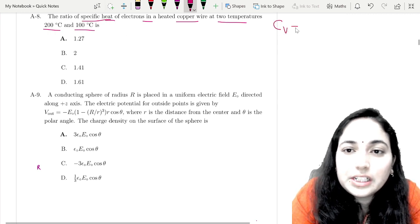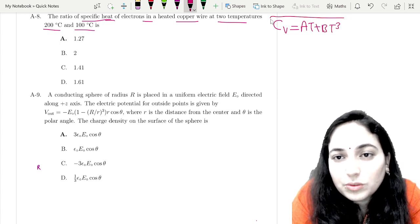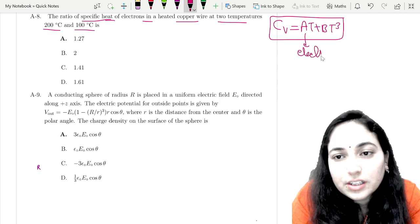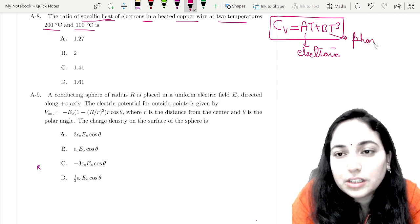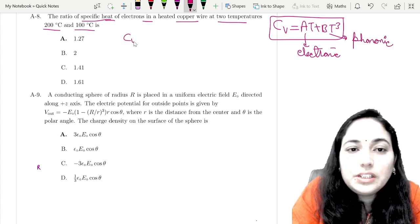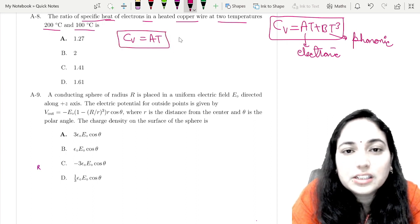When we talk about lattice specific heat, we get AT plus BT³ because we consider electronic specific heat and lattice vibrations due to phononic specific heat. For electronic specific heat, cv only takes AT because lattice vibrations or phononic specific heat are not included. So cv is proportional to T.